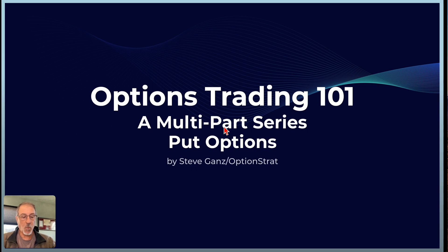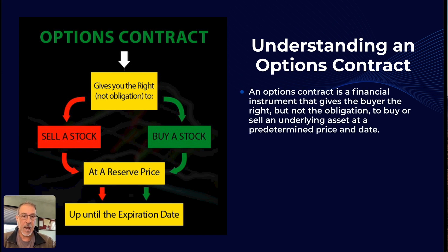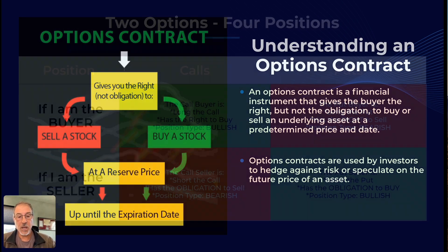Let's walk through put options and what they are. This is a bit of an overview because I covered this section in the call options episode as well, but I think it's important to make sure people have these basics in hand. An options contract is a financial instrument that gives the buyer the right but not the obligation to buy or sell an underlying asset at a predetermined price and on a predetermined date. Options contracts can be used by investors to hedge against risk — essentially as insurance — or to speculate on the future price of an asset.